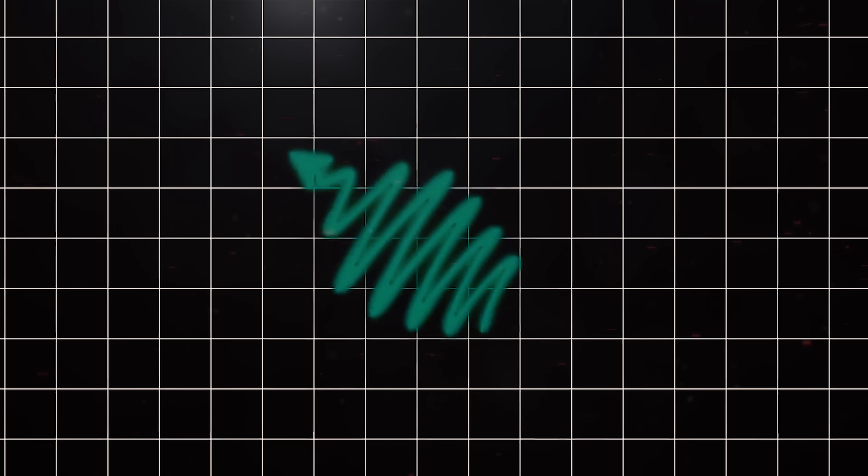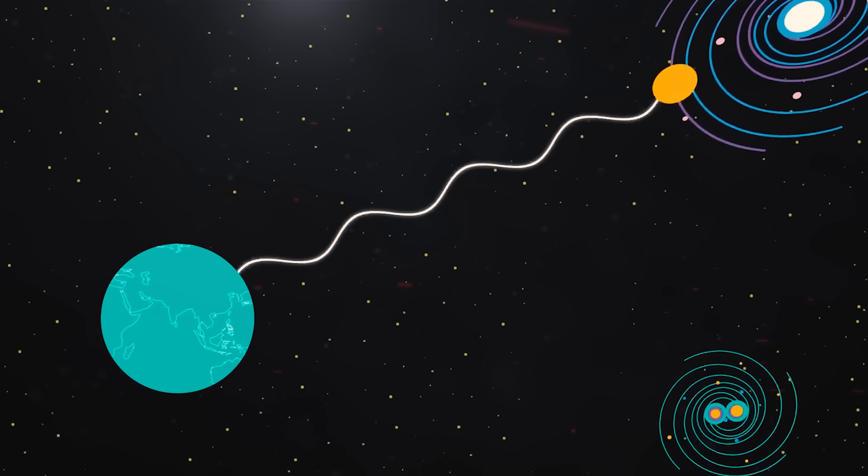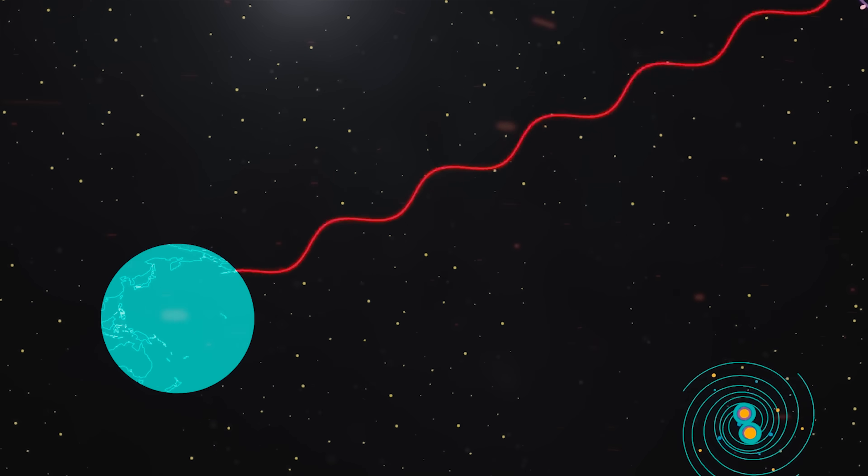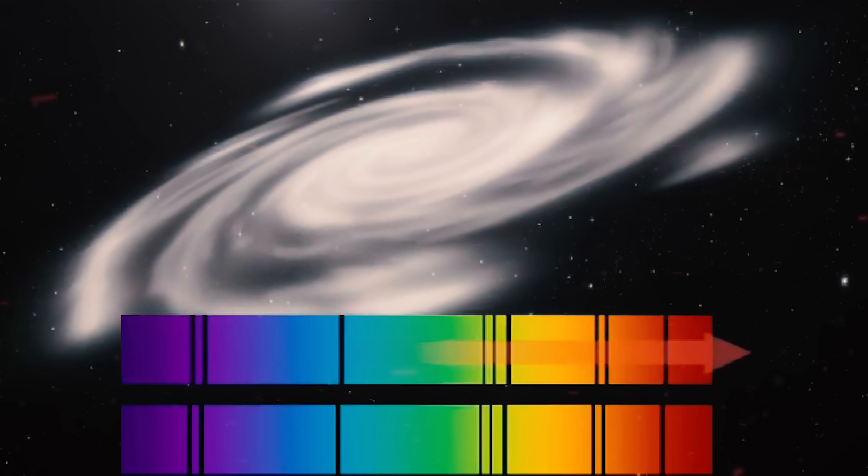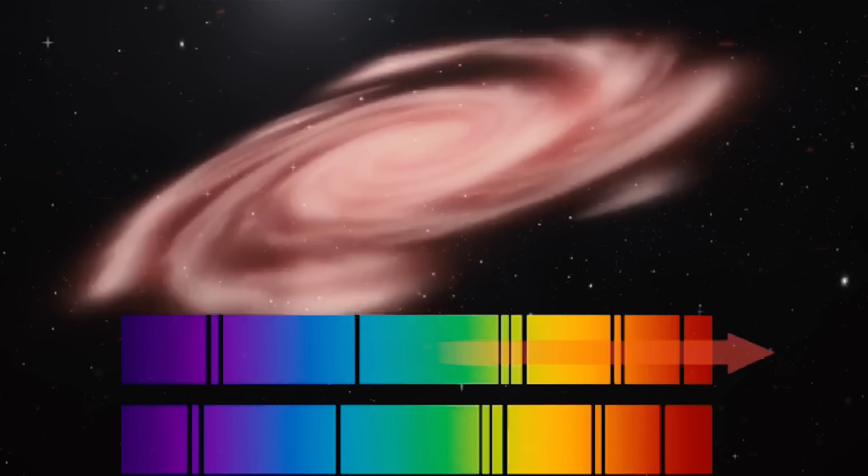This stretching of light is called redshift. The longer the light travels, the further toward the red end of the electromagnetic spectrum the expansion of the universe shifts its light. This means that redshift can be used as a measure of distance.